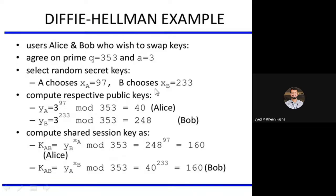After calculating the public keys, the shared key must be calculated. KAB with respect to Alice is computed as YB to the power of XA mod Q, and with respect to Bob as YA to the power of XB mod Q. Both give the result 16. In Diffie-Hellman, the shared key must be the same — once you get the same shared key, the algorithm is working correctly. If different, the calculation is wrong.